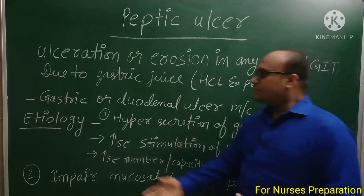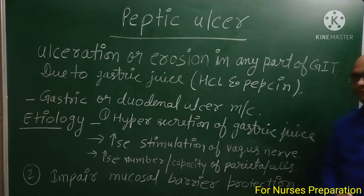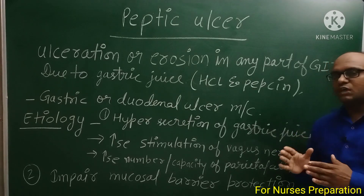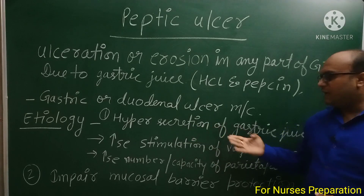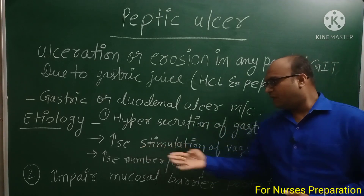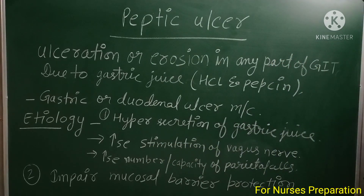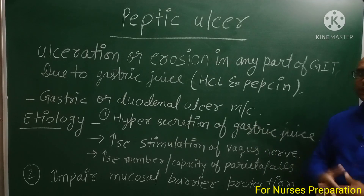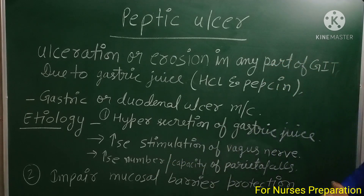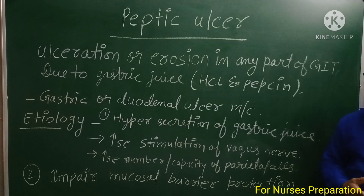अब बात करते हैं peptic ulcer की etiology की — किस कारण से ये होते हैं? पहला कारण है hyper secretion of gastric juices। यदि किसी person के अंदर gastric juice का hyper secretion हो रहा है तो peptic ulcer develop हो सकते हैं। ये hyper secretion हो सकता है increased stimulation of vagus nerve से — vagus nerve stimulate होने पर gastric juices secret होते हैं। दूसरा कारण: stomach में पाई जाने वाली parietal cells की संख्या बढ़ जाए या उनकी capacity बढ़ जाए, जिससे वो ज़्यादा मात्रा में gastric juice produce करने लगें।